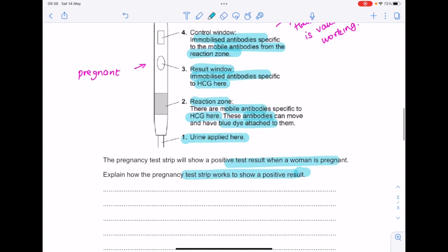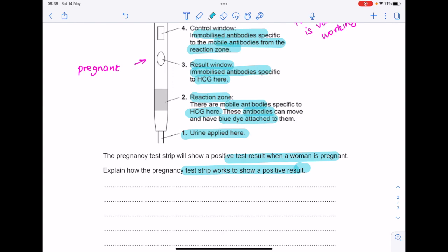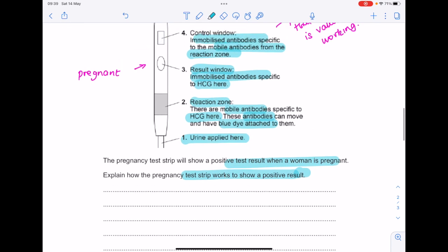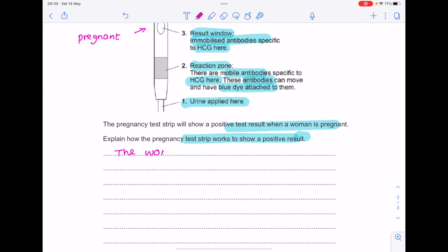The pregnancy test strip will show positive result when the woman is pregnant. Explain how the pregnancy test strip works to show positive results. There's so much information in that question, do not stress. It's worth six marks, but just say what you see and what does the woman have to do to try and get a positive test result. First of all, the woman urinates on the end of the test strip around here.